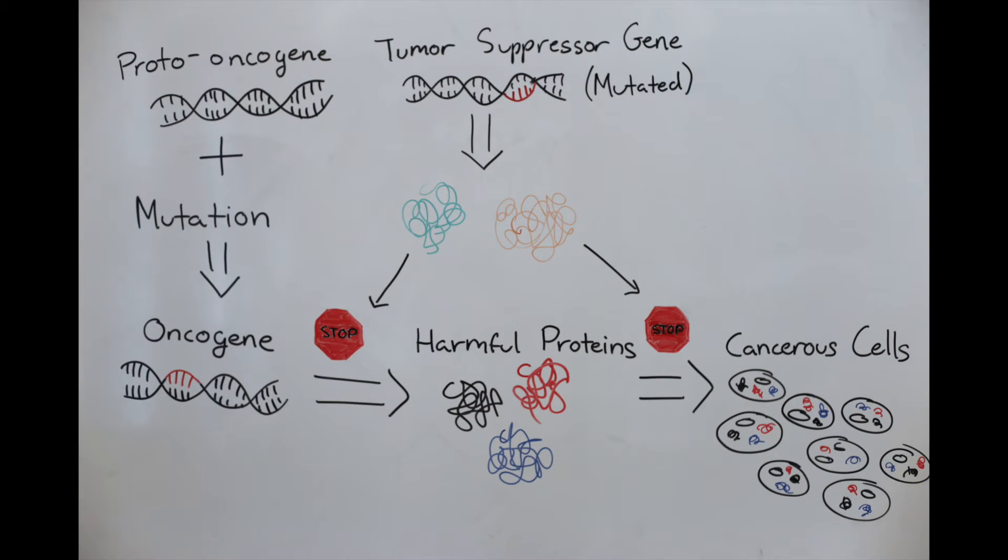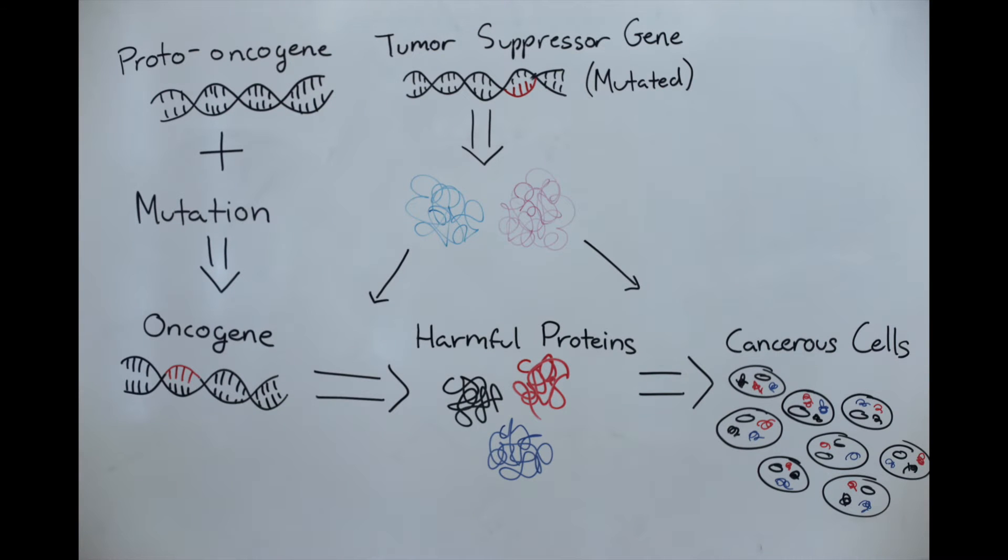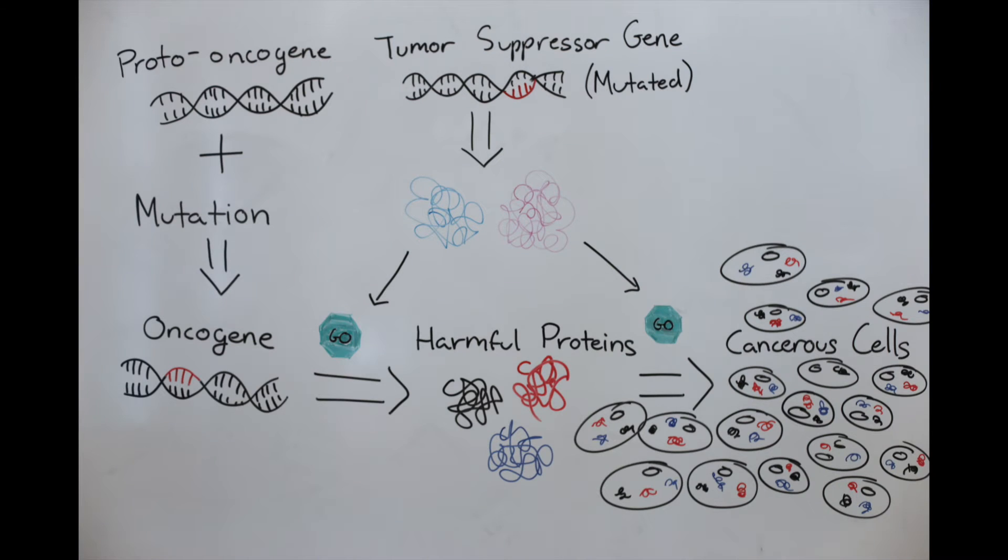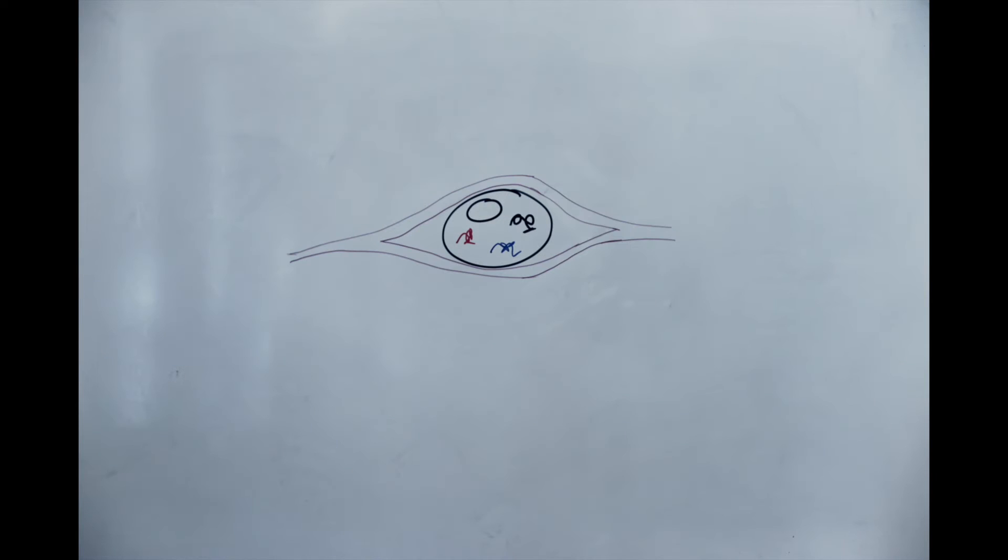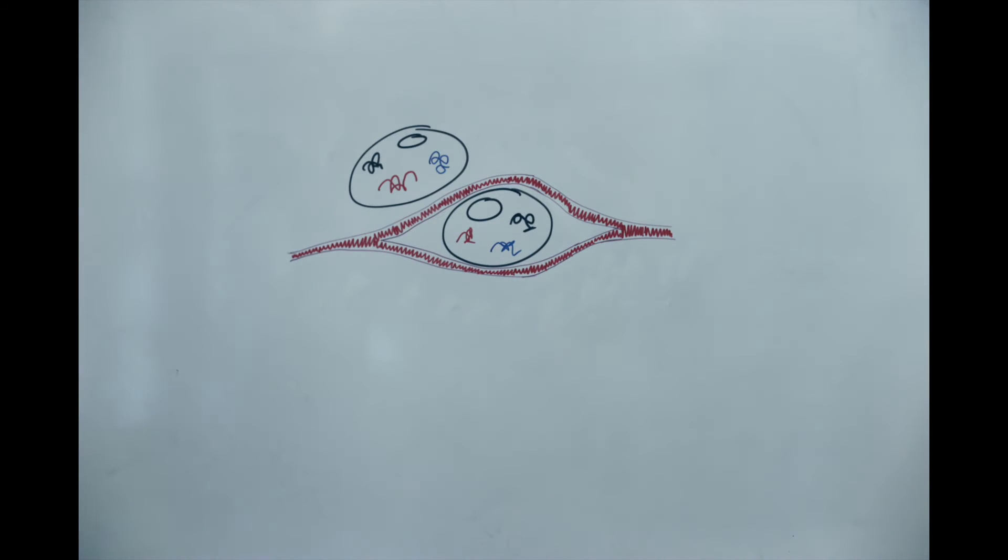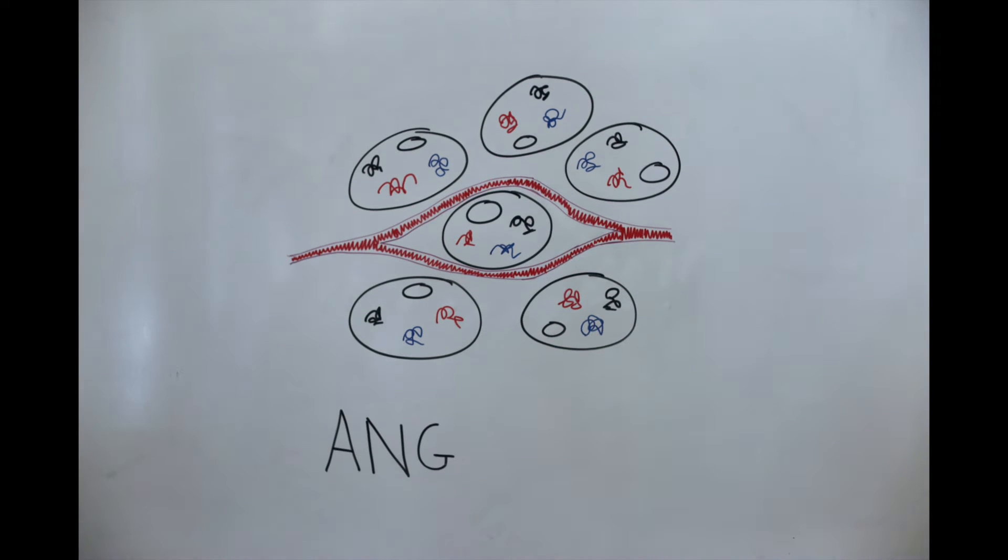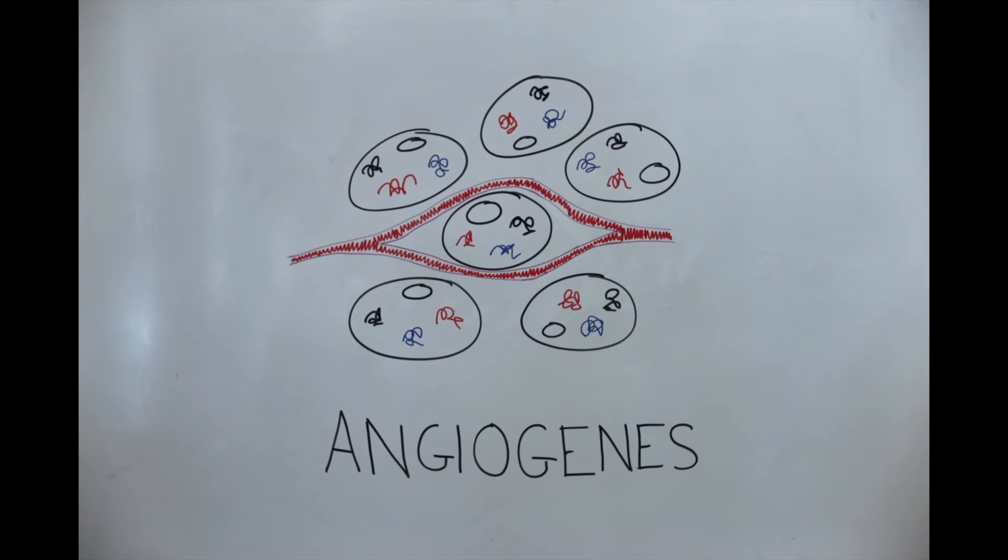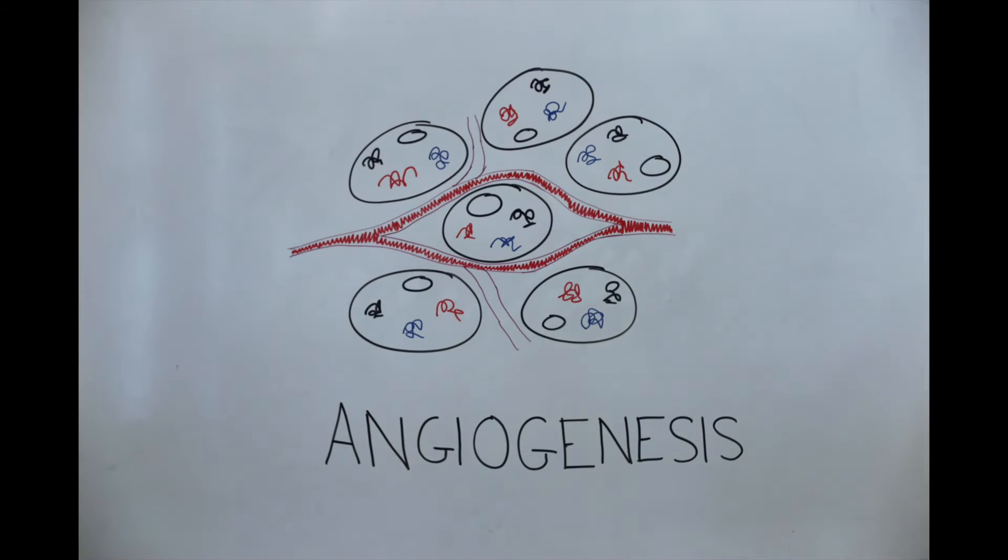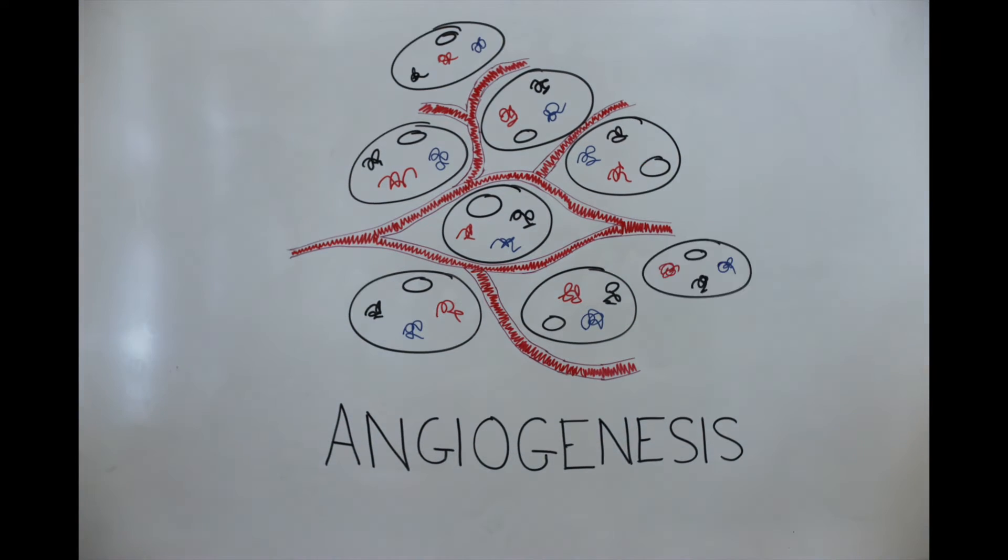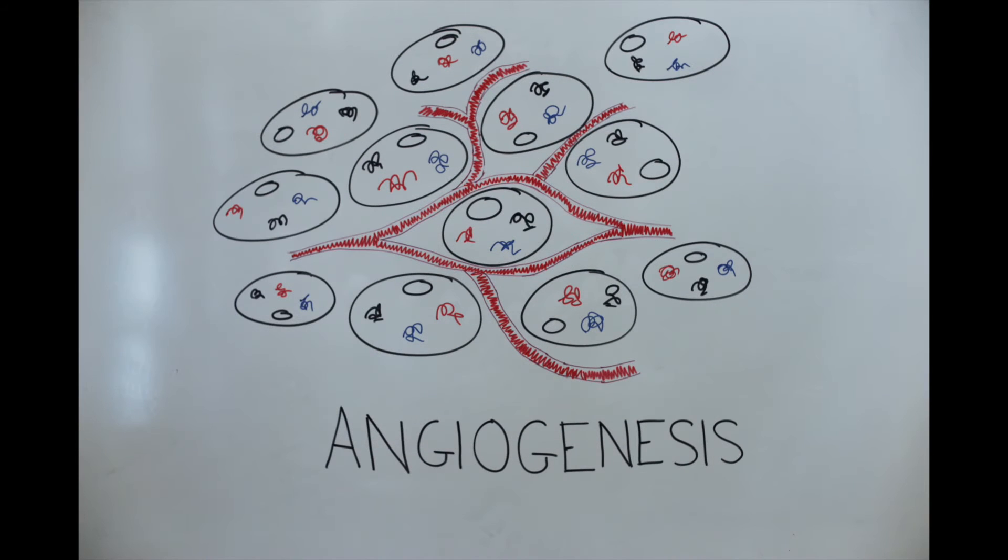But when tumor suppressor genes are mutated, allowing oncogenes to express dangerous proteins, cancerous cells can begin to grow, replicate, and spread, using up the body's energy and resources. As cancer cells grow uncontrollably, they need more blood to replicate and survive. In order to develop new blood vessels to assist in cell growth, developing cells use an intracellular pathway called angiogenesis to establish new blood vessels and help these new cells grow, migrate, and survive.